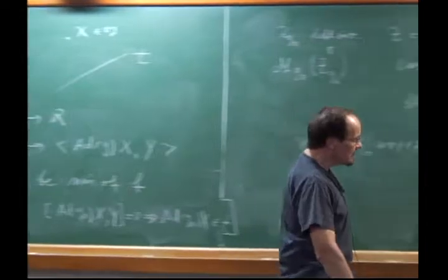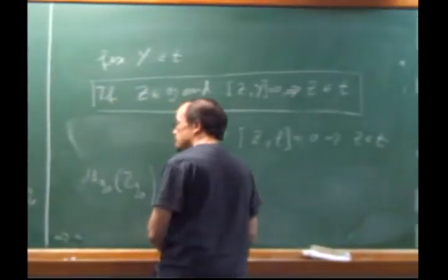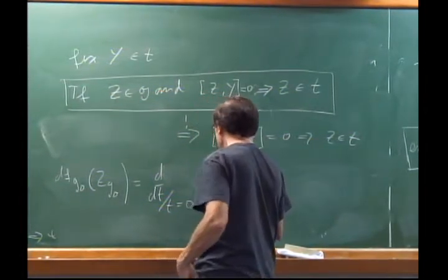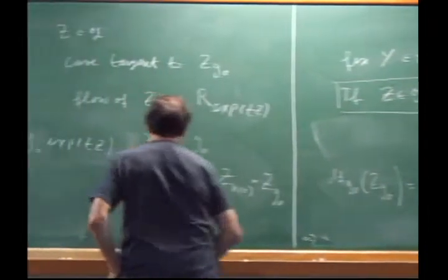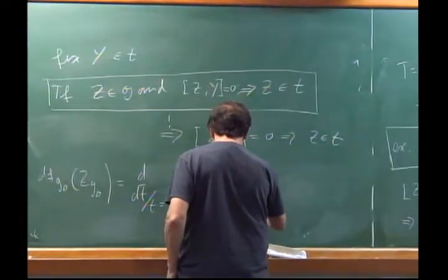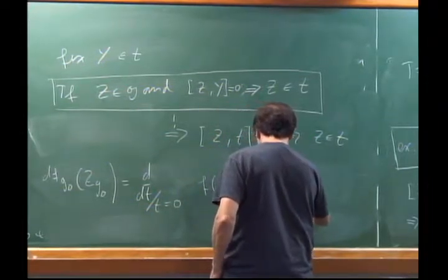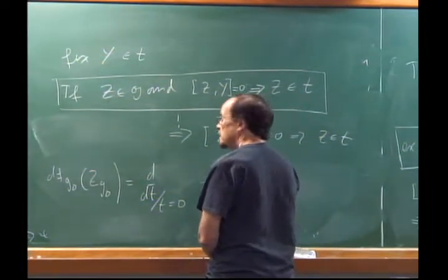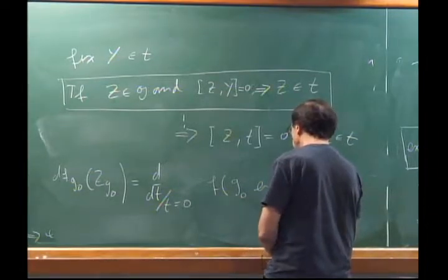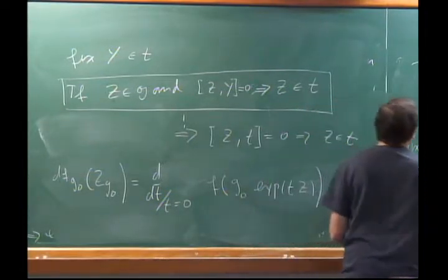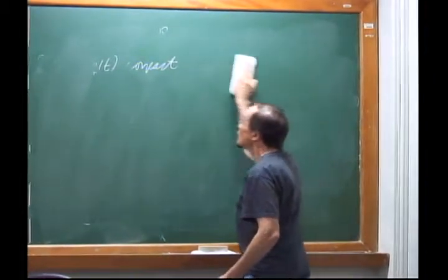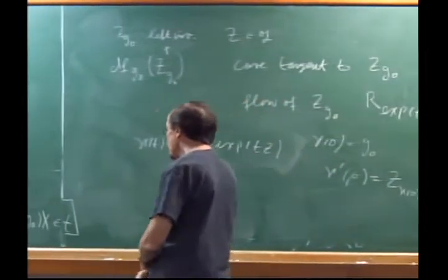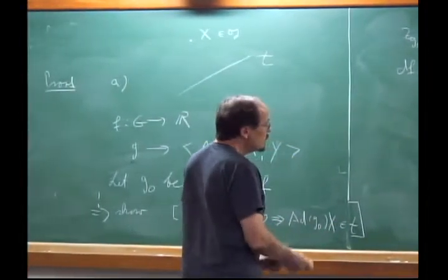So the proof is very geometric: minimize the angle between the orbit and T, show the minimum is zero, and then the vector lies in T. This is much better than the proof of existence of a Cartan subalgebra — it's purely geometric.